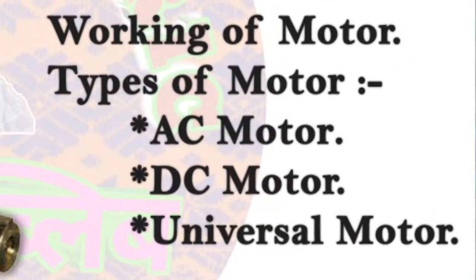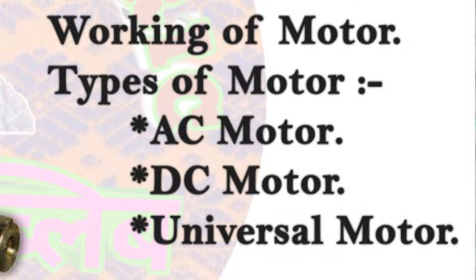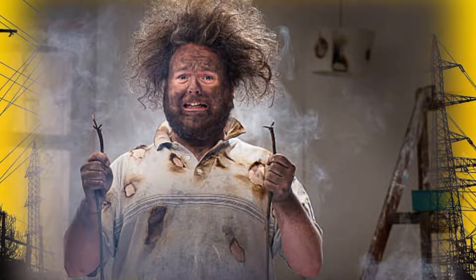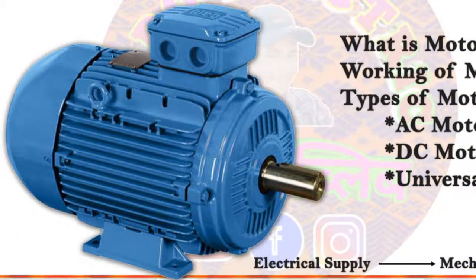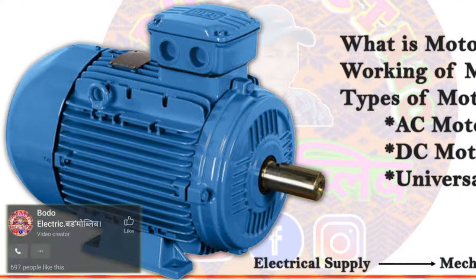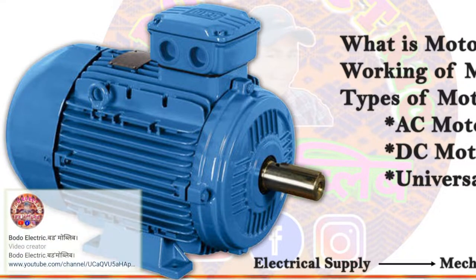The motor is the most important thing to know. The AC motor is the alternating current motor and DC motor is the direct current motor. The universal motor is the most important thing to know. The AC motor and DC motor is directly connected to the solar battery. This is the DC motor. This is the AC motor and DC motor — this is to display the universal motor.